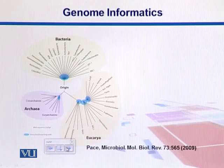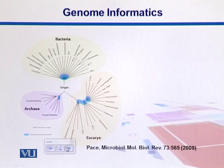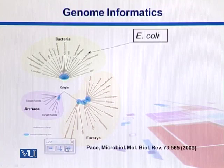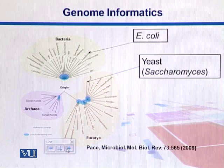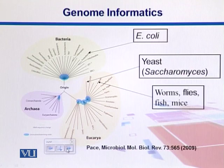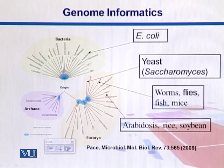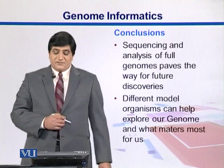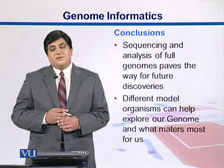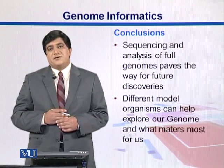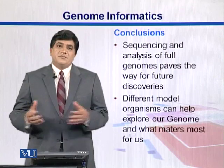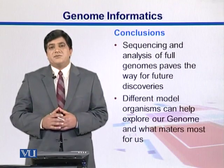The three groups are bacteria, archaea — special organisms that live under harsh conditions — and eukarya, which is the largest group. We pick model organisms from important branches of this tree of life: E. coli for bacteria, yeast as an example of fungi, worms, flies, fish, and mice from animals, and Arabidopsis, rice, and soybeans from plants. In conclusion, sequencing of genomes paves the way for future discoveries, and model organisms are the best source with which we can study these genomes and interpolate results toward higher organisms.